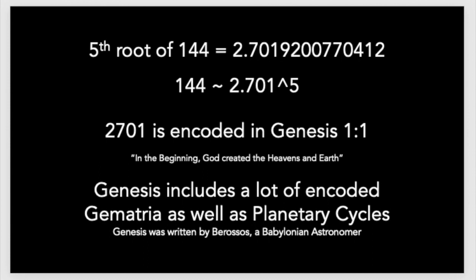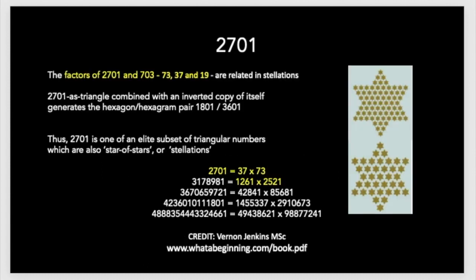But the folks who do this work, they're not completely coming out of left field because Genesis was written by Berossus, who was a Babylonian astronomer. And he encoded a lot of planetary information and math into Genesis. But it's not just encoded into Genesis.